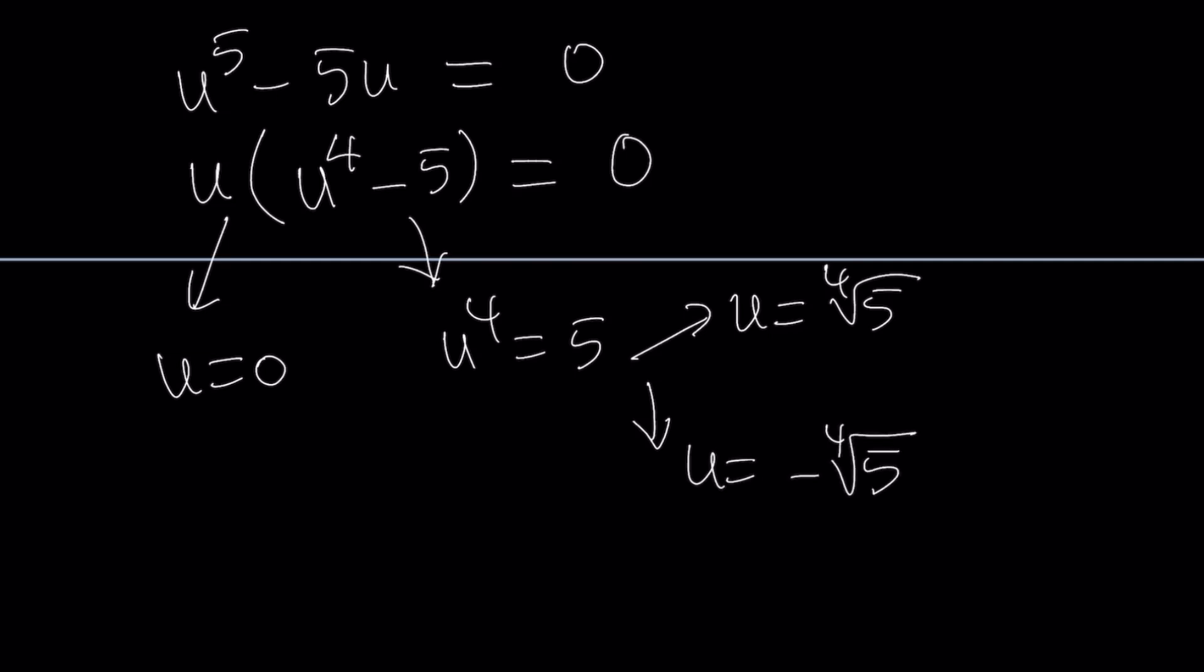Because 4 is an even number. When you raise u to the fourth power, even if it's negative, it's going to become positive. So in other words, there are two numbers whose fourth power equals 5. So we got two solutions.